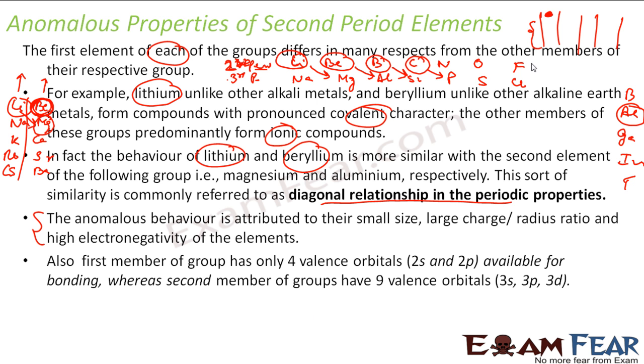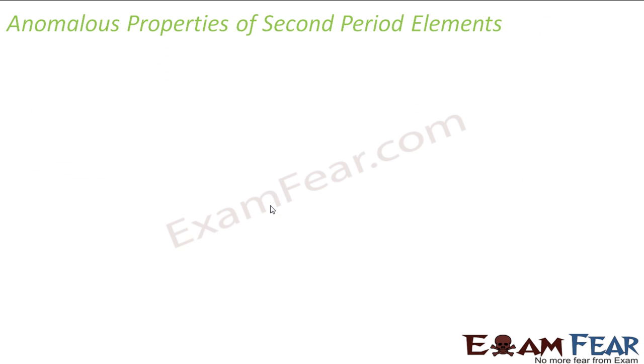Also, one more reason why it happens is because elements in this period, second period - they have only 2S and 2P orbitals. But from third period onwards, they have 3S, 3P, and 3D also orbitals. If you see the electronic configurations also, there are more orbitals available. That's the reason why they have an anomaly. And this anomaly is called diagonal relationship in the periodic properties.